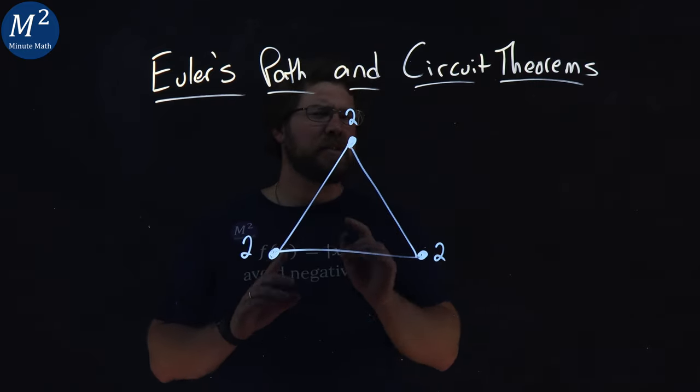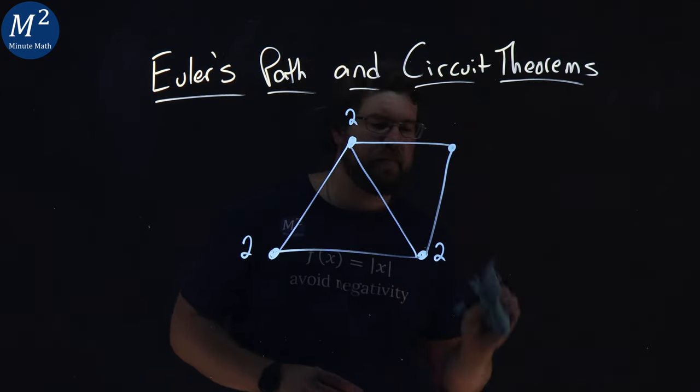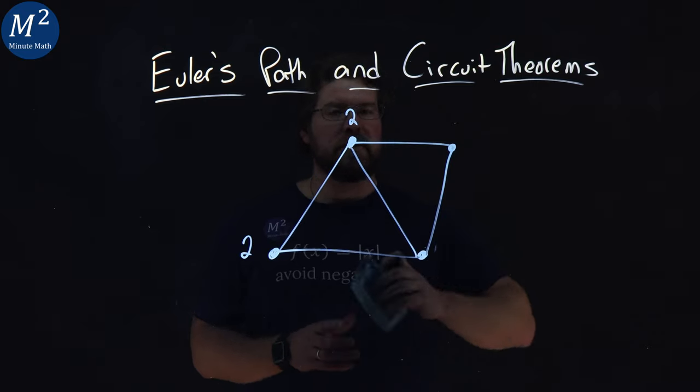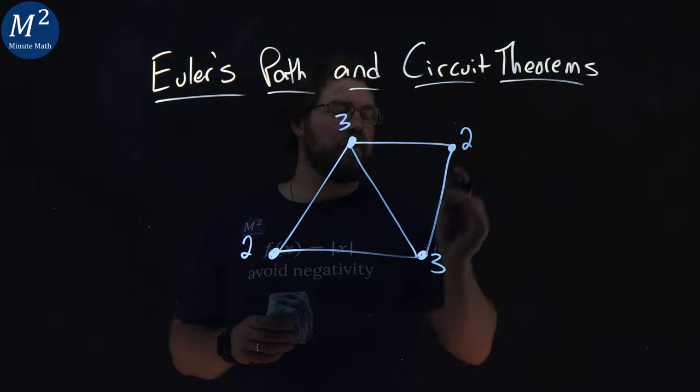Now if I change this slightly and put a point here and let's connect it here and here. These vertices here change the degree from 2 to 3, and this one is a 2.